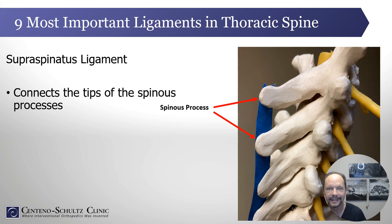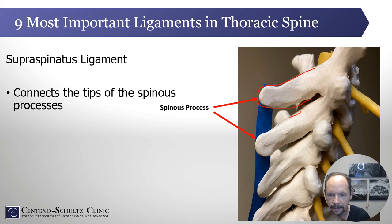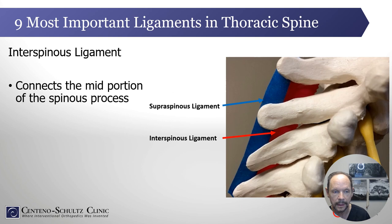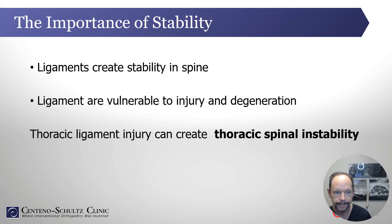The next one is the supraspinous ligament, depicted here on the backside — these are the spinous processes, the dinosaur bones. You have one at each level and this piece of connective tissue connects the tips of the spinous processes posteriorly. And then the interspinous ligament connects the spinous processes between the two, but as opposed to the supraspinous which is at the back, it's in the mid portion of the spinous process.